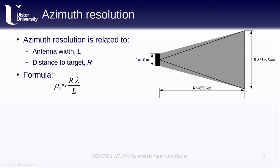Using approximate values for the ERS satellite of 10 meters for L, 850 kilometers or so for R, and 5 centimeters for lambda, we have a ground beam width of approximately 5 kilometers.